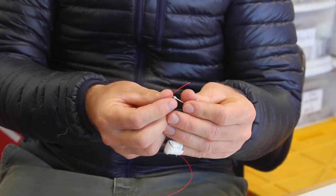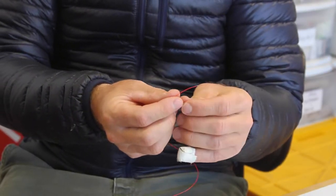Now we're going to learn how to tie a no-slip mono loop, also known as the Rapala knot.